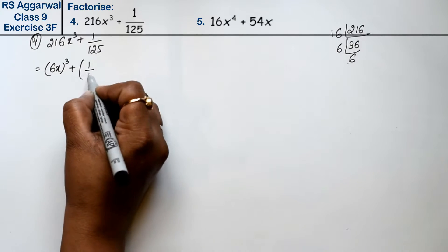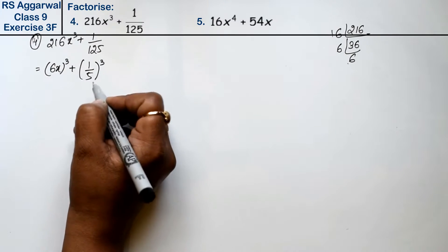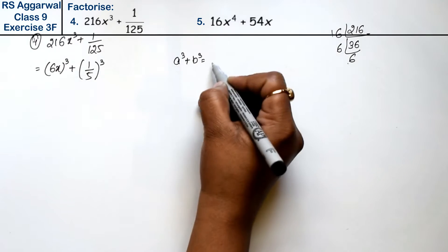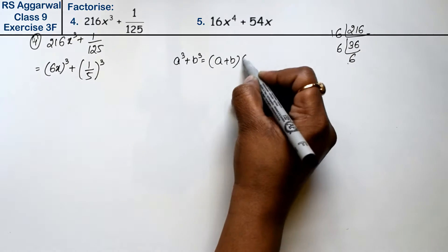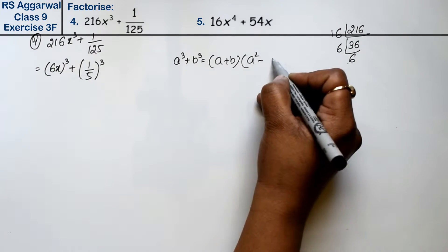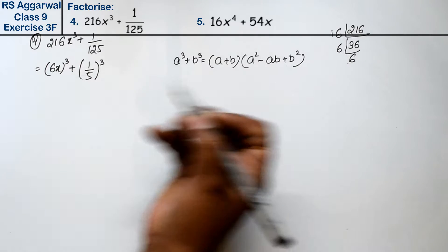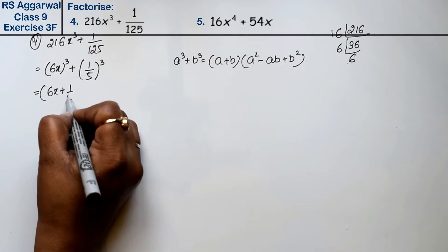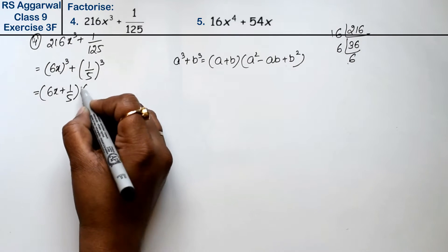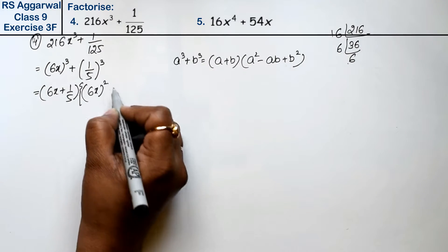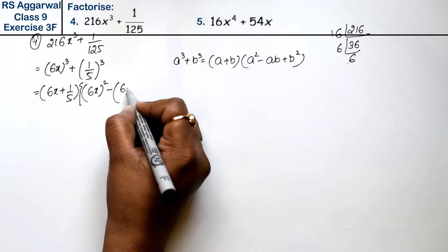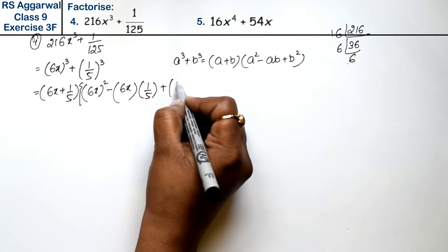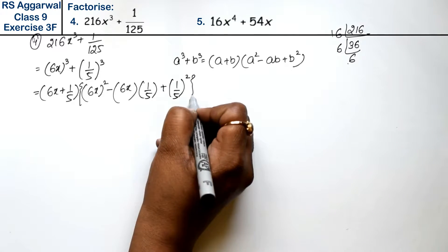So a cube plus b cube formula is a plus b times a square minus ab plus b square. So what is this? a plus b, that means 6x plus 1 upon 5, times 6x square minus 6x into 1 upon 5 plus 1 upon 5 whole square.